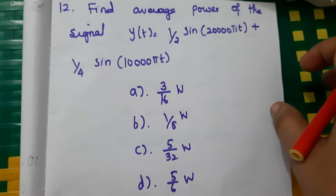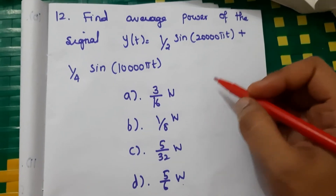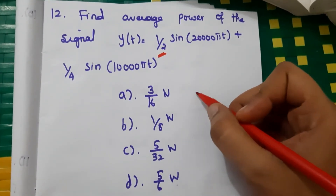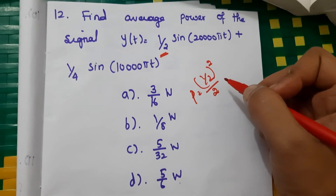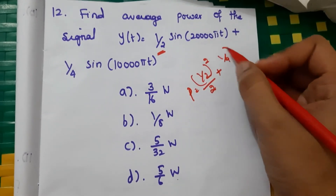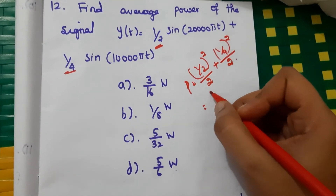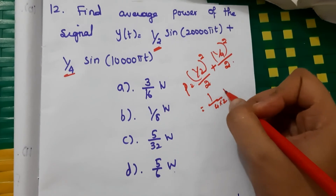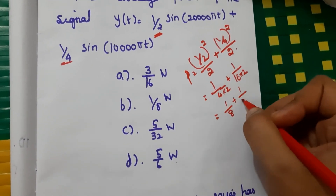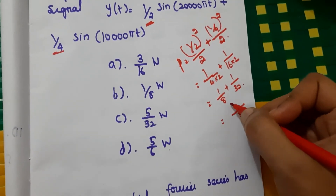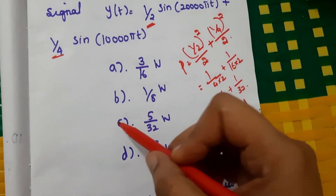Twelfth question: find the average power of the signal y(t) = (1/2)sin(20000πt) + (1/4)sin(10000πt). Using the power formula, average power = (1/2)²/2 + (1/4)²/2 = 1/8 + 1/32 = 4/32 + 1/32 = 5/32 watts. So the answer is C, 5/32 watts.